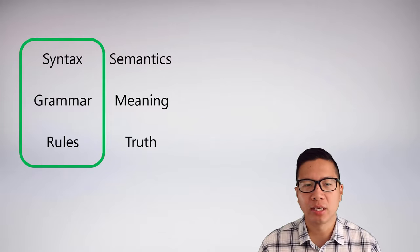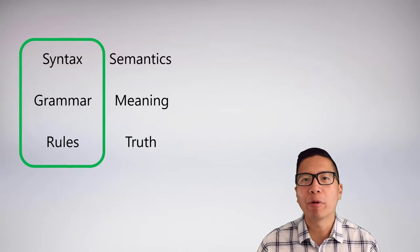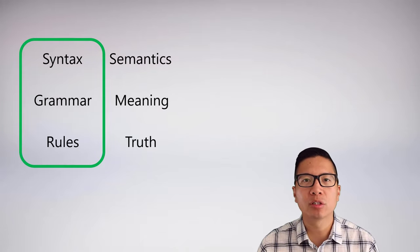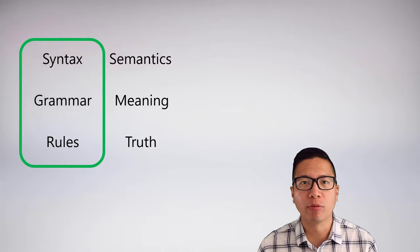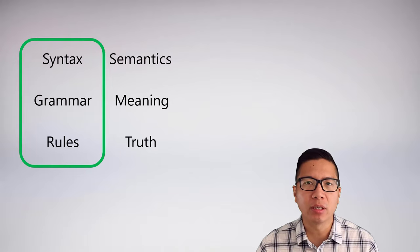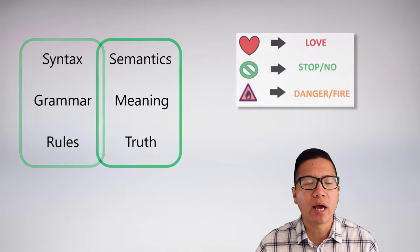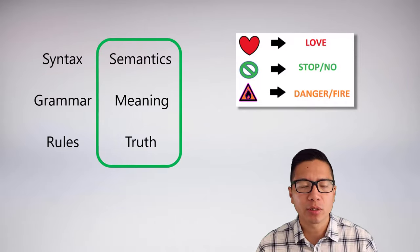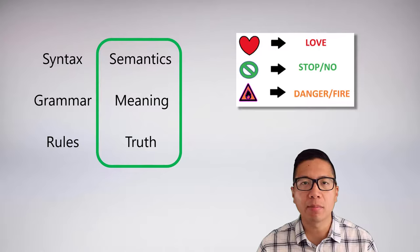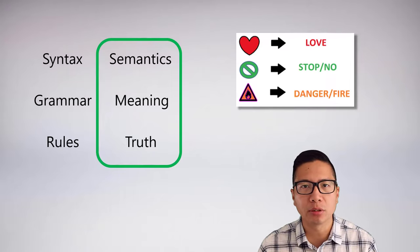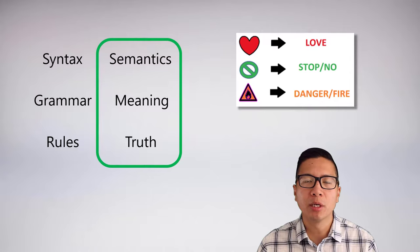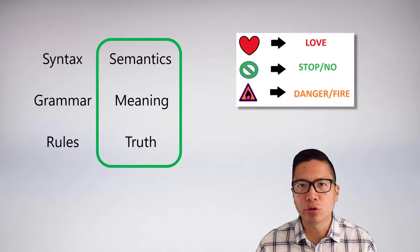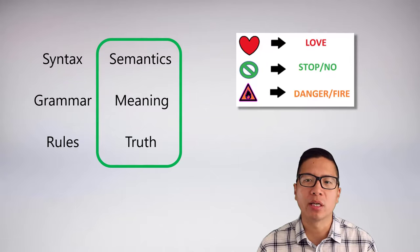We've gone over the syntax of sentential logic and we understand now the grammar and the rules required to make well-formed formulas and well-formed sentences. What we're missing, and what we're going to do in this video, is add the semantics to our system. Semantics typically means adding meaning to the uninterpreted symbols, but in this case the meaning we're going to adopt is just about when a sentence is true and when a sentence is false.